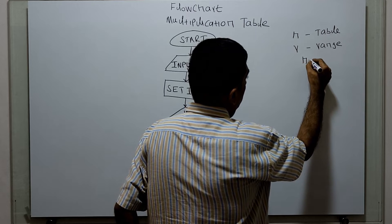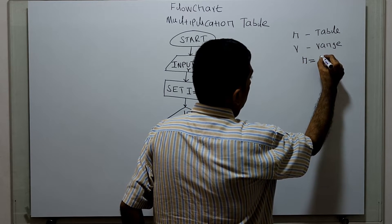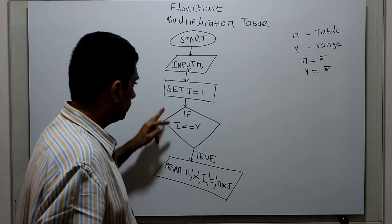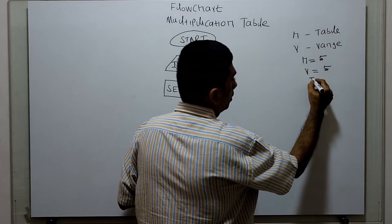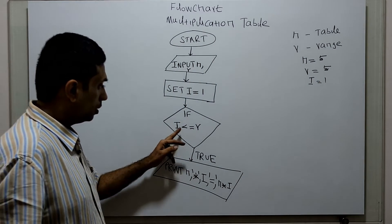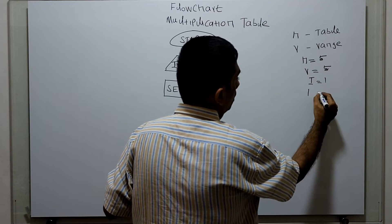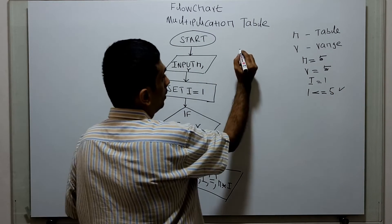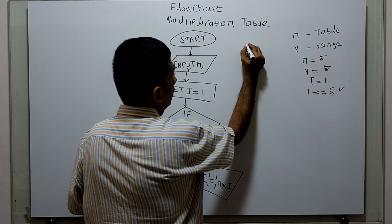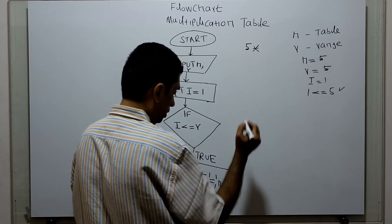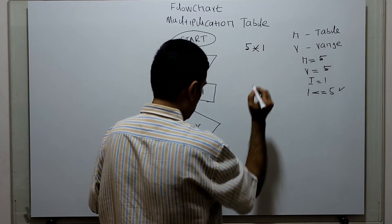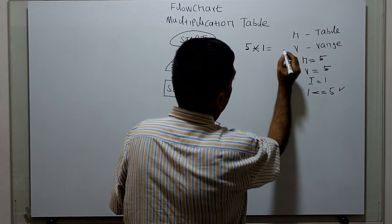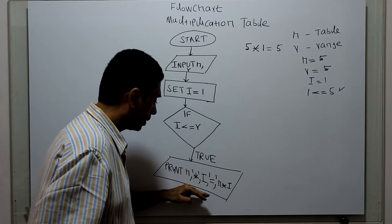I will tell you how it works. Initially I am giving value n equal to 5, r equal to 5. First, i is equal to 1. It will check i less than or equal to r, which means 1 less than or equal to 5, which is true. So we print: n is 5, the star symbol, then i value which is 1, then the equal to symbol, then n times i, meaning 5 times 1. We print it in this format.